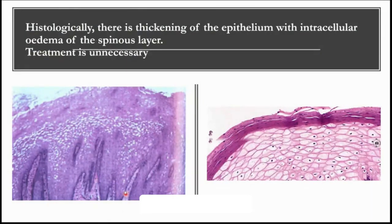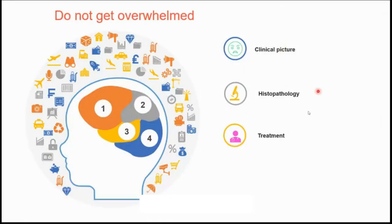Histologically you will see thickening of the epithelium with intracellular edema — a lot of edema within the epithelial cells. Treatment is not necessary at all — you just have to notice and follow up. To recollect: we studied three benign lesions — squamous papilloma, keratoacanthoma, and nevus. Squamous papilloma looks like a cauliflower-like projection — it's an exophytic growth — and histopathologically it has finger-like projections with a core of connective tissue and keratin on top which gives it the white color.